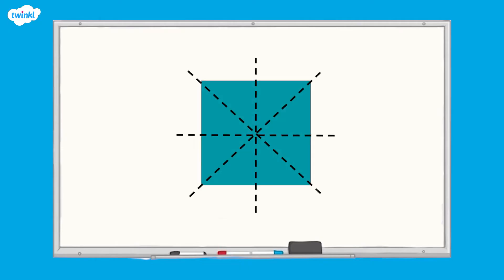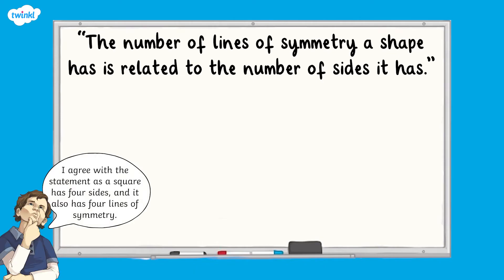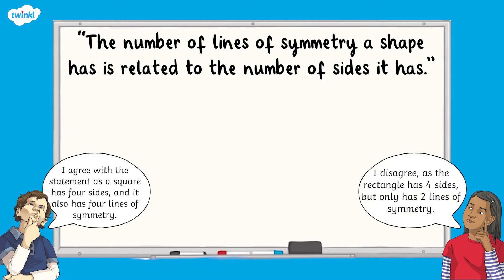Thinking about what we have just learnt about lines of symmetry, consider this statement: the number of lines of symmetry a shape has is related to the number of sides it has. Joseph says he agrees with the statement as the square has four sides and it also has four lines of symmetry. Abby disagrees, as the rectangle has four sides but only has two lines of symmetry. What do you think? Who do you agree with?